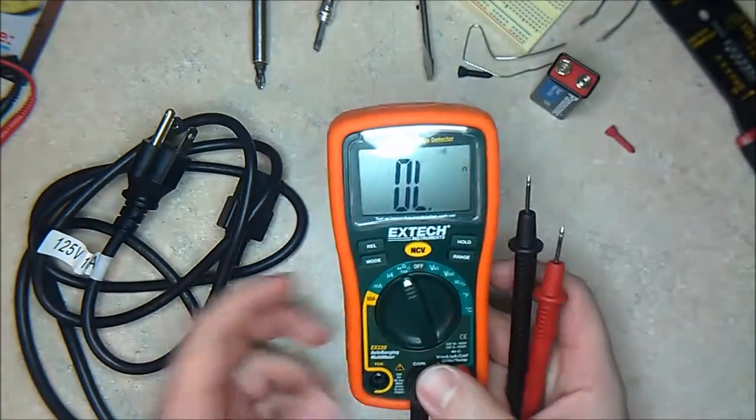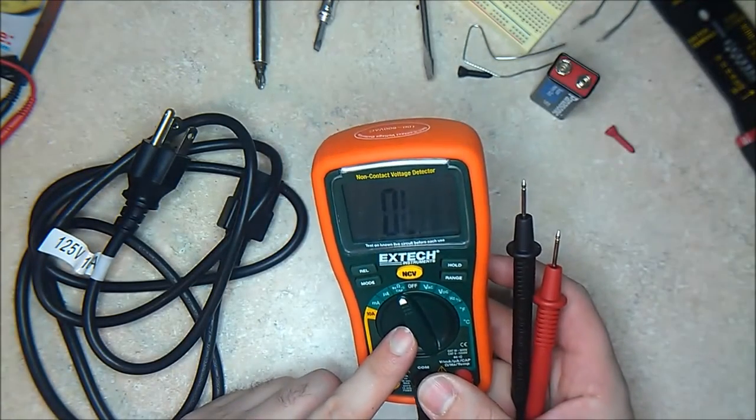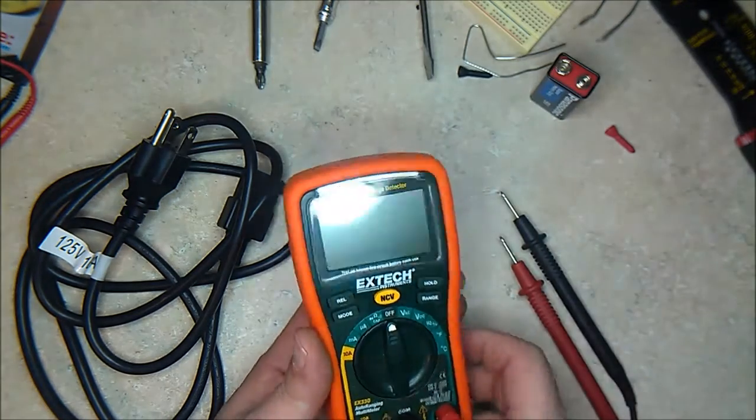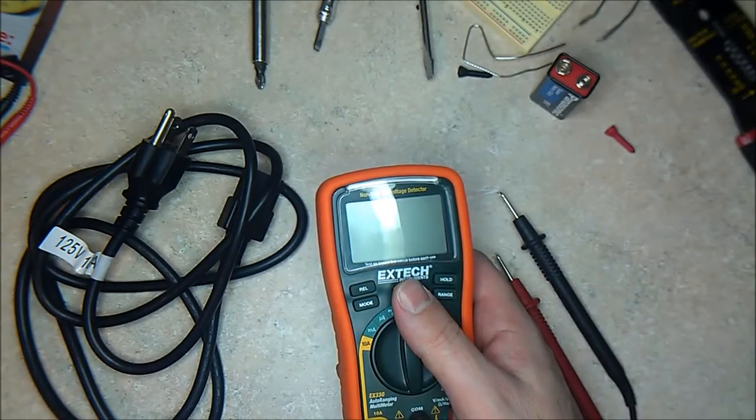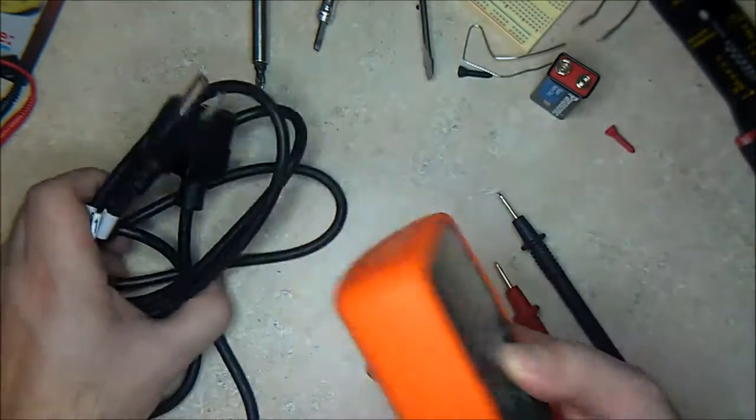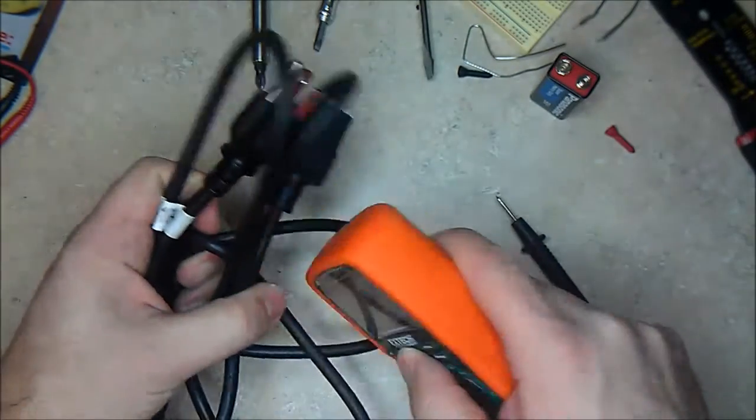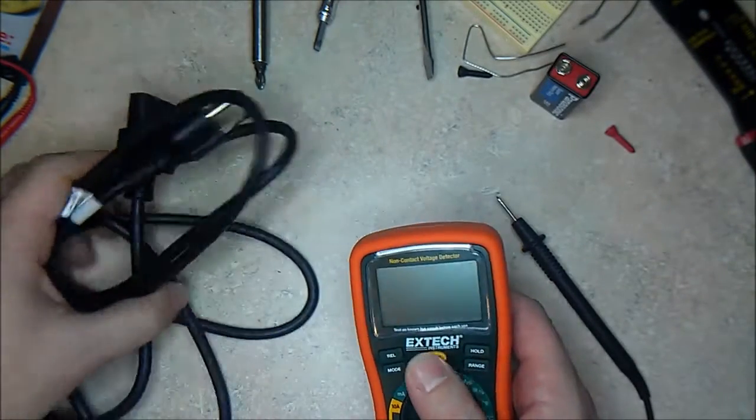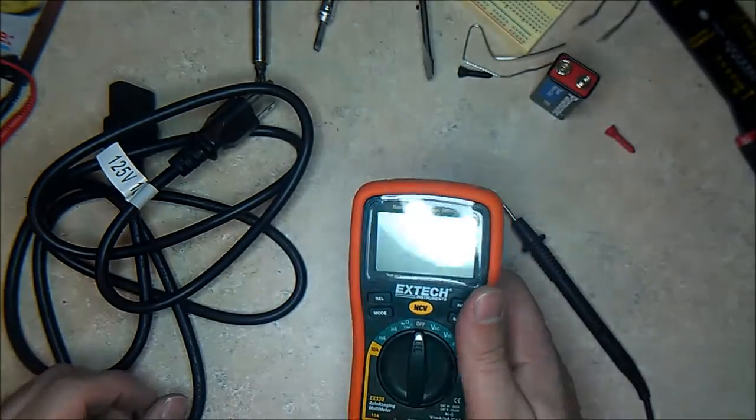Again, auto-ranging multimeters, that's what you want to get. The non-contact voltage detector is very handy when you want to make sure that the thing is unplugged. You want to come to it. Now the cable is unplugged. You can see it doesn't detect any power whatsoever. So it comes very handy.